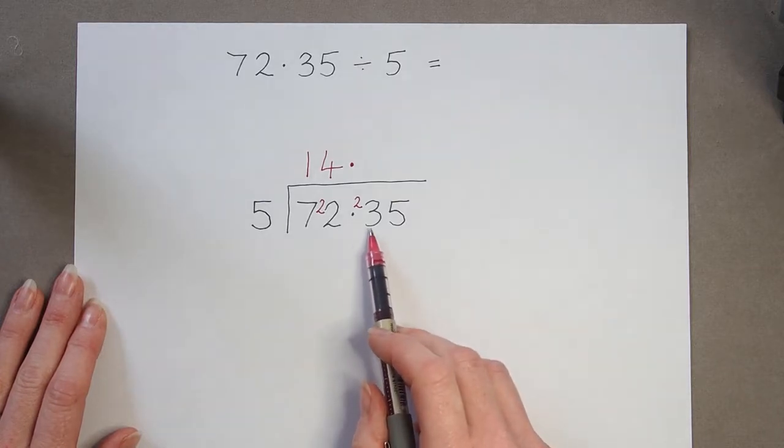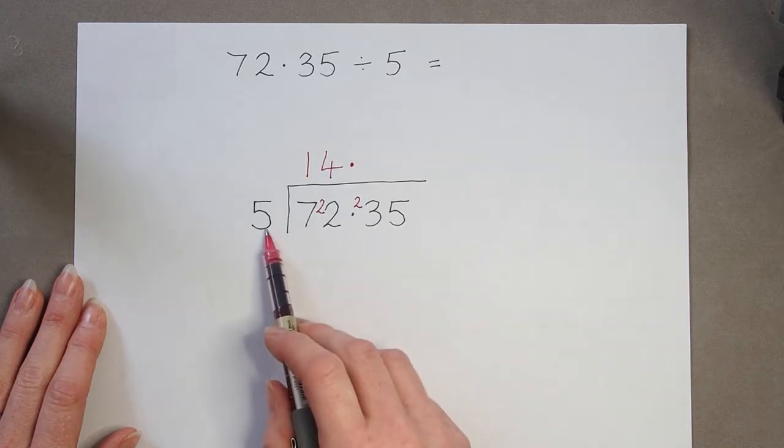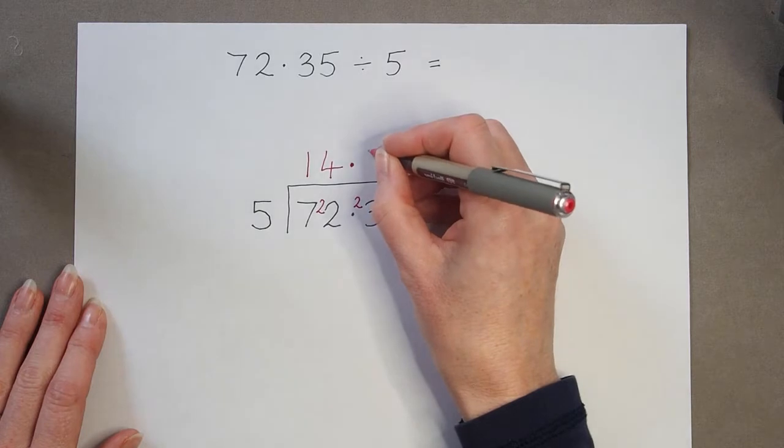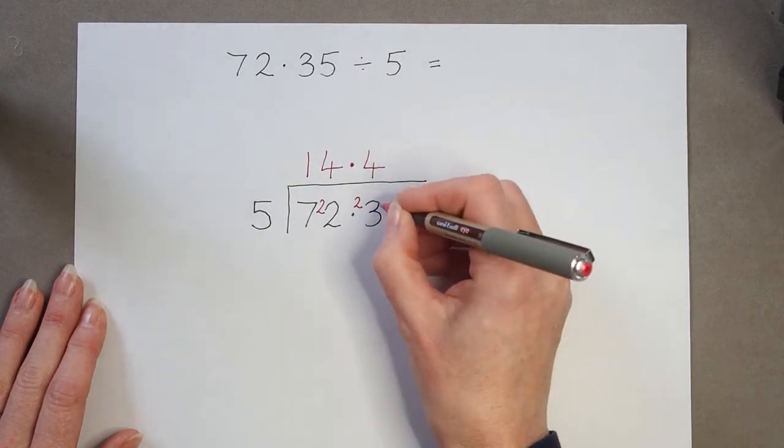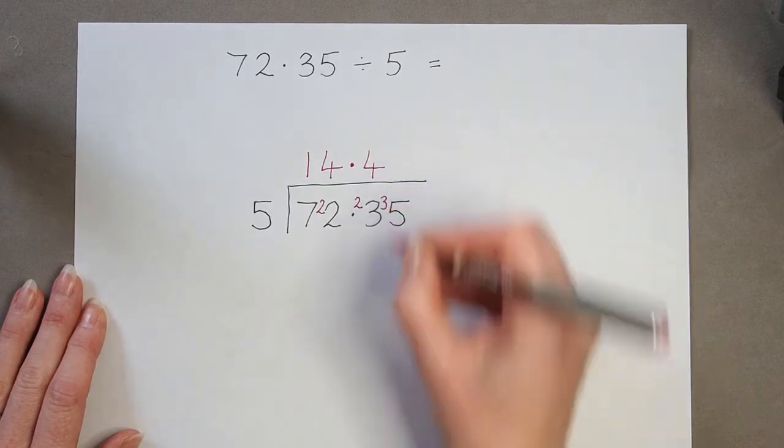And I carry on working exactly the same way. I've got twenty-three divided by five. So that again is going to be four. Four fives are twenty. So that leaves me with a remainder of three.